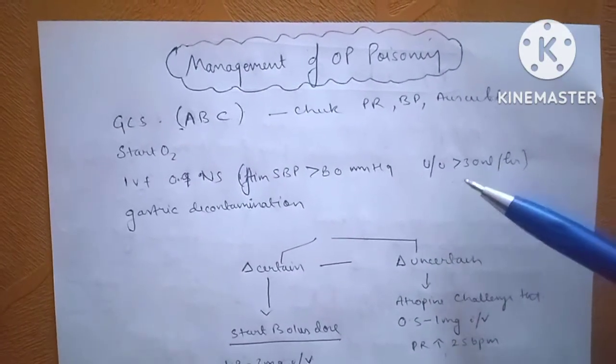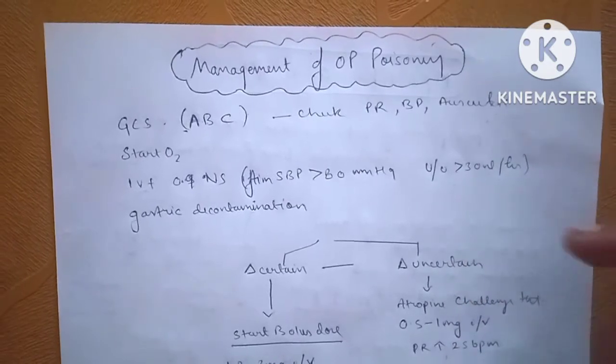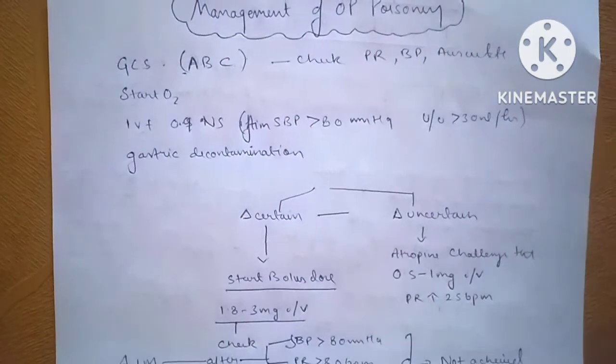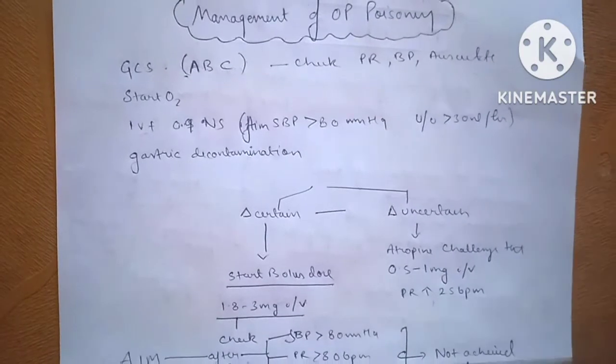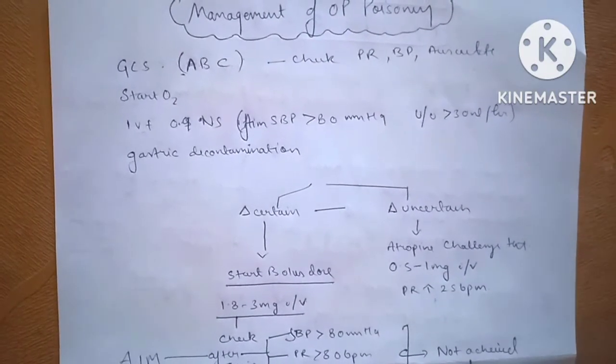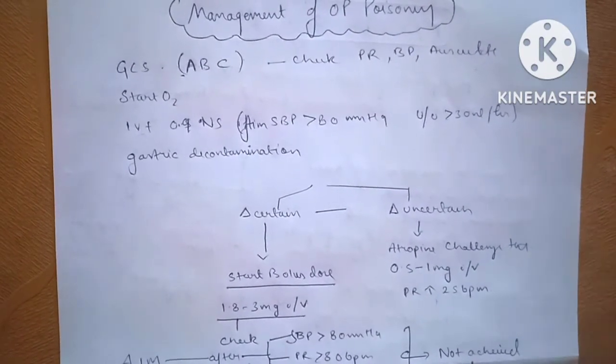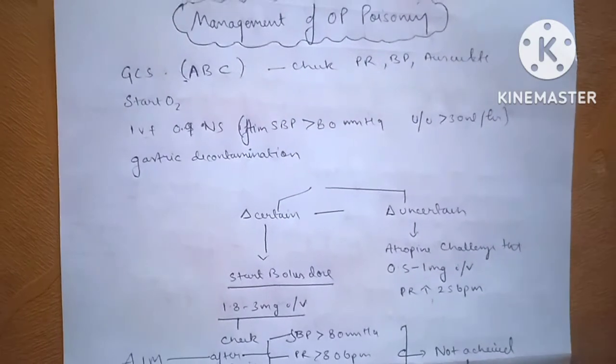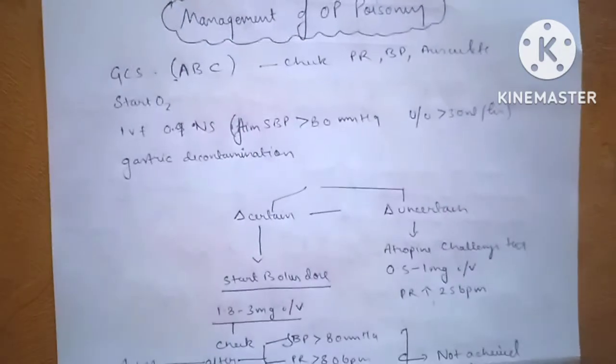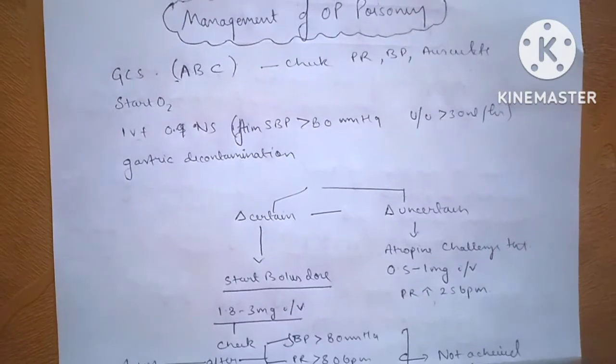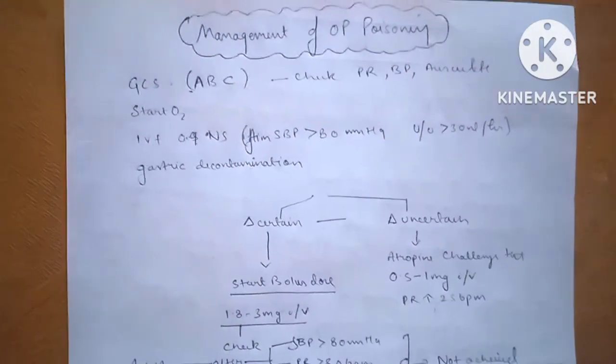Gastric decontamination with charcoal is done within two hours of the ingestion of the poison. Generally, the absorption of OP is at a very high rate from the gut, so late decontamination is of less advantage.